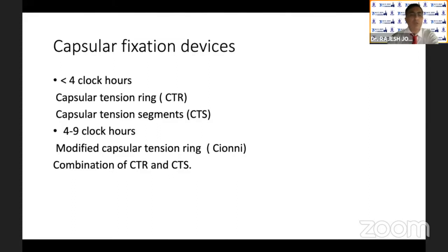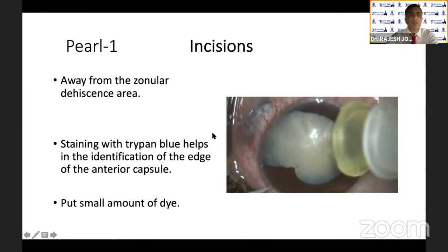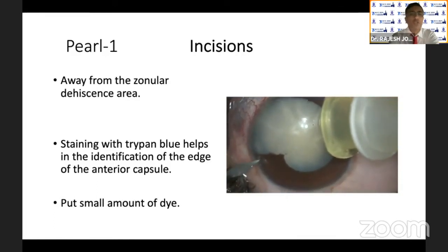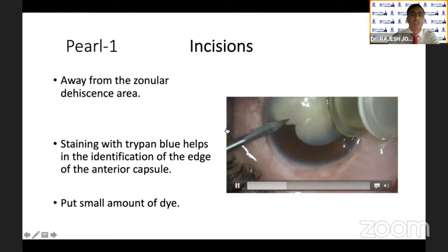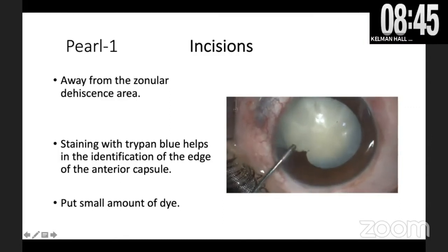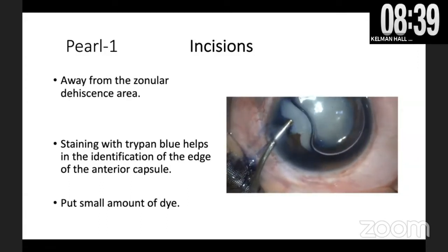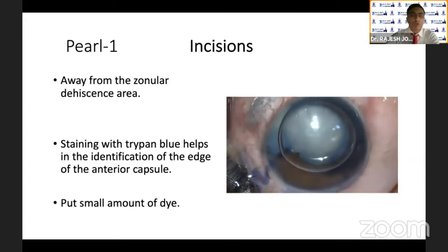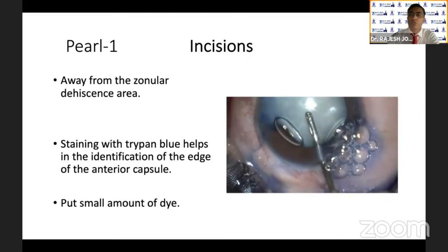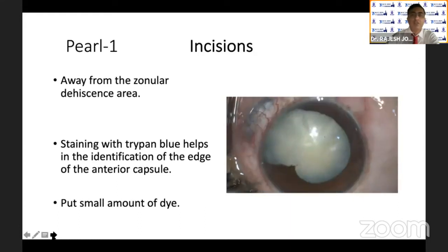If you have less than four hours of subluxation, you can fix the bag with a capsular tension ring or capsular tension segments. If subluxation is between four to nine clock hours, use a modified capsular tension ring or a combination of CTR and segment. Pearl number one is the incision — it should be away from the zonular dehiscence area, both the side port and the main incision. Staining with trypan blue helps identify the anterior capsule edge while placing the CTR, but use only a small amount of dye to avoid staining the vitreous.